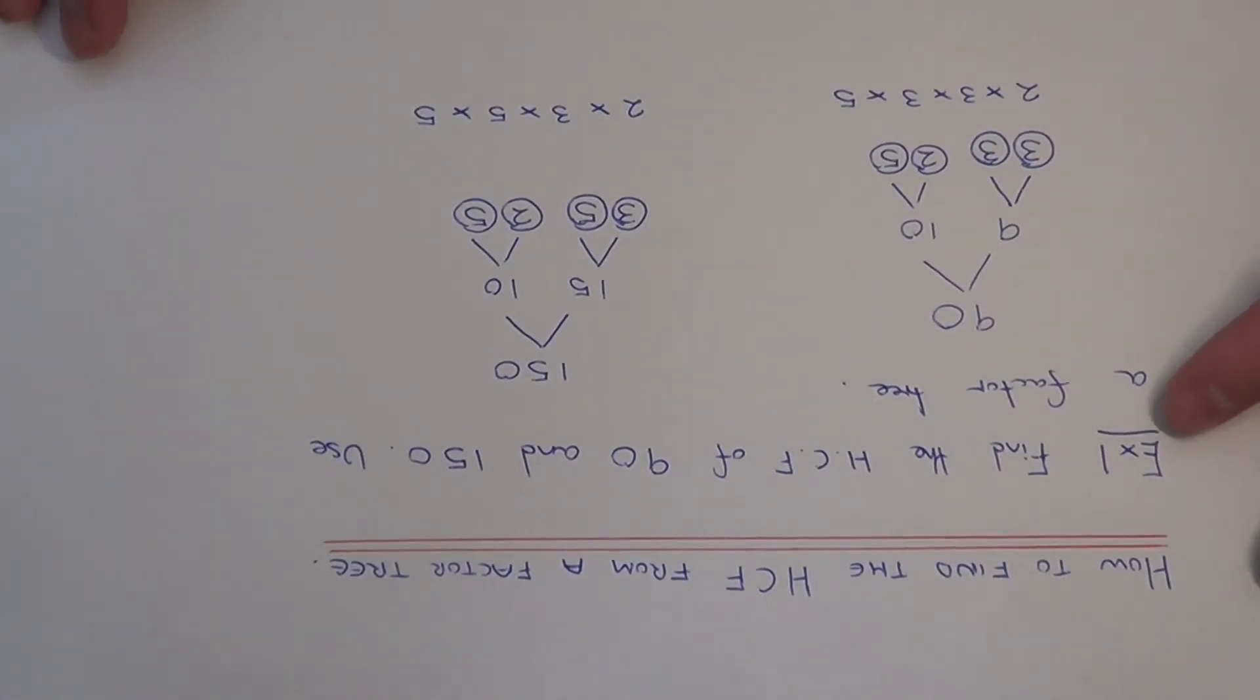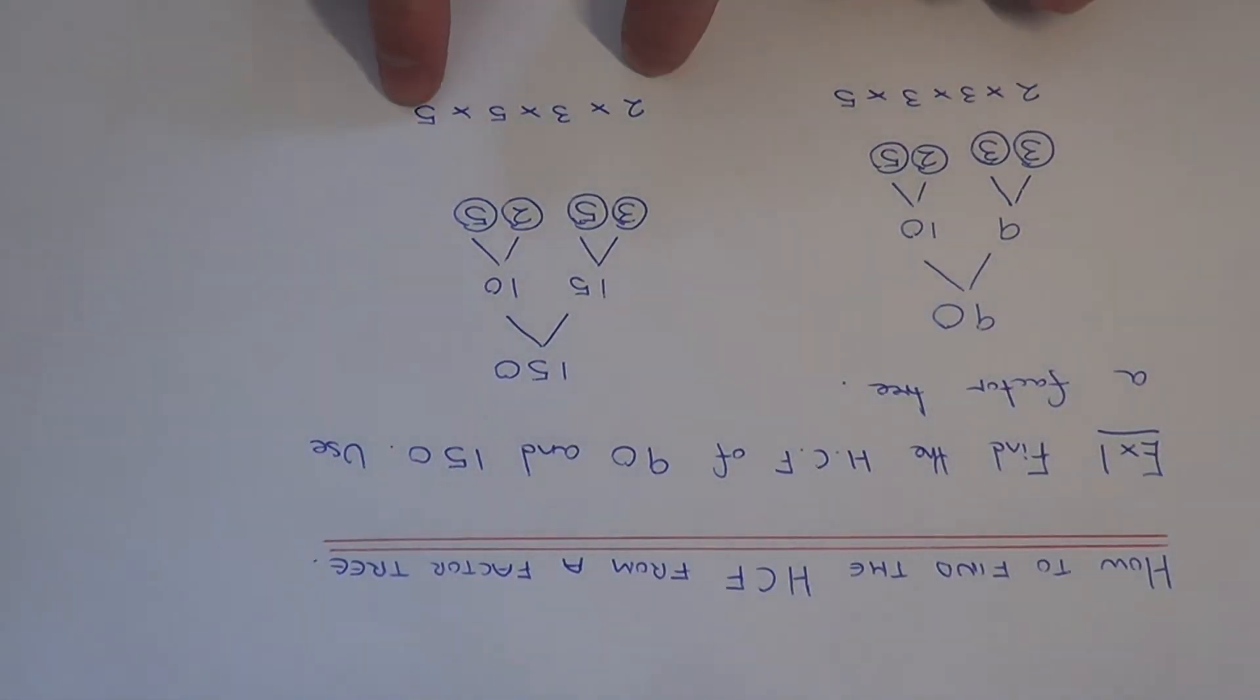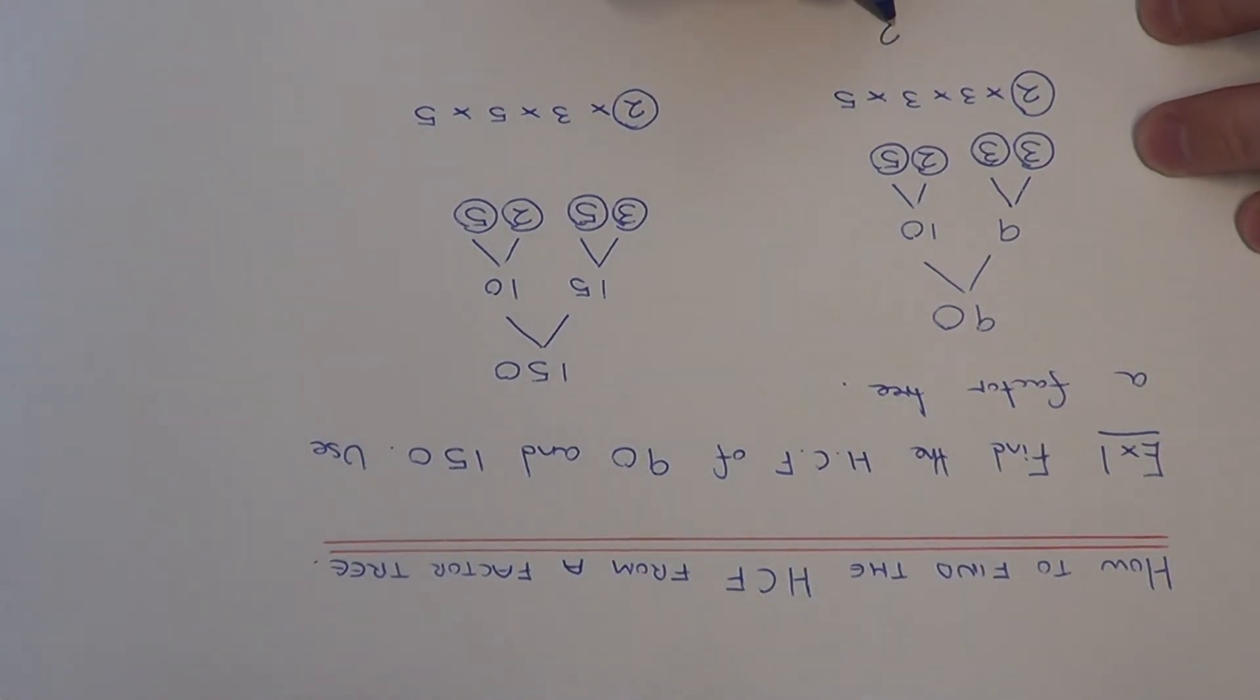To work out the highest common factor from the product of prime factors we just found, we need to look at the factors which are the same in both products. We've got 2 in both products so let's write the 2 down. What else have we got the same? We've got a 3 here and a 3 here, so let's put another 3 down.